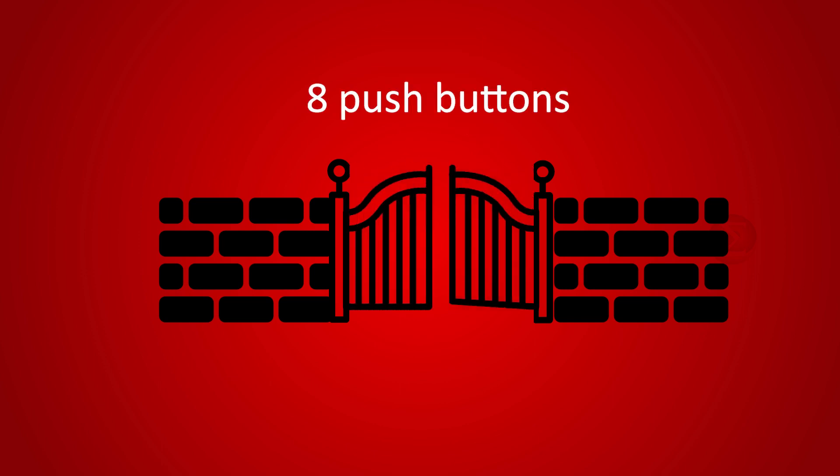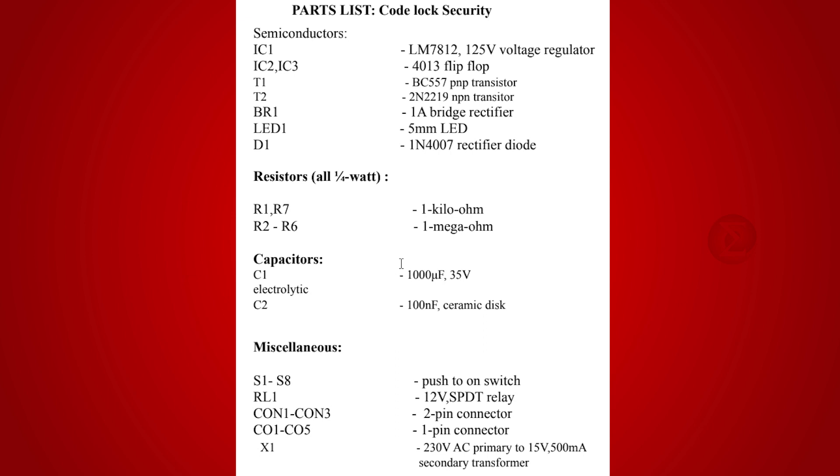We will use eight push buttons to set a code. Let us take a look at the component list to develop this project. You need to have two IC4013 D flip-flop ICs, a 12V LM7812 voltage regulator IC, a VC557 PNP transistor, a 2N2219 NPN transistor, a bridge rectifier, a 5mm LED, a 1N4007 rectifier diode,